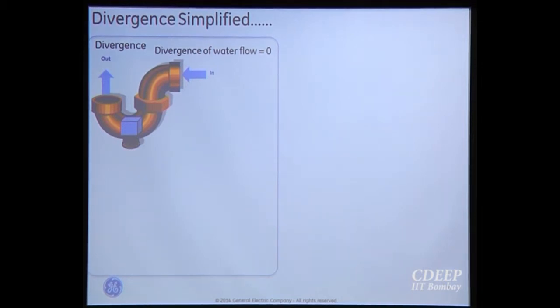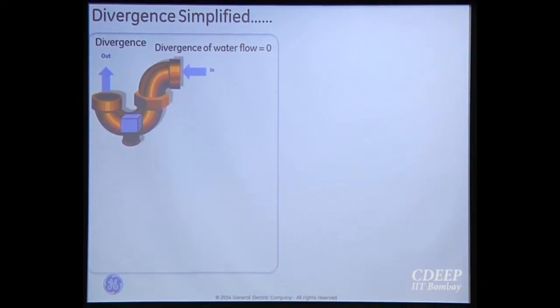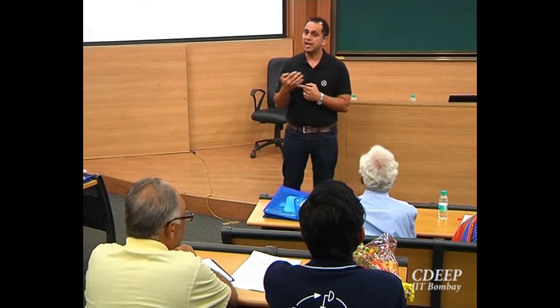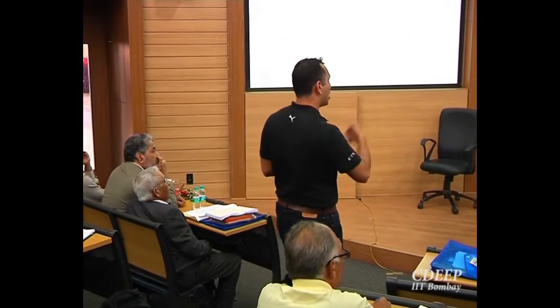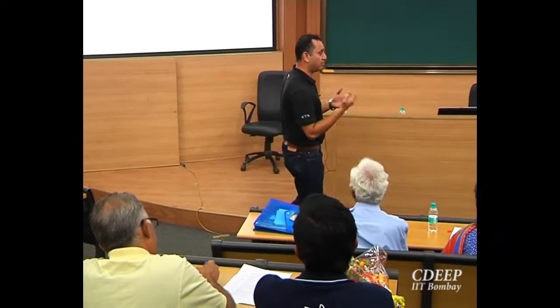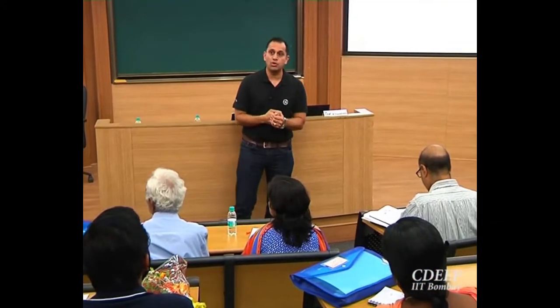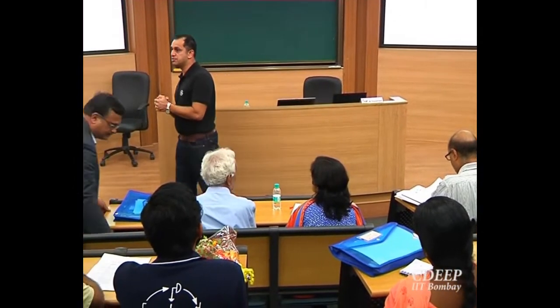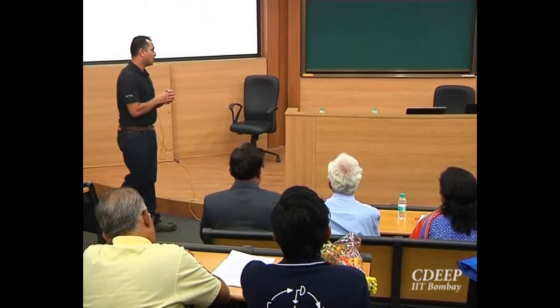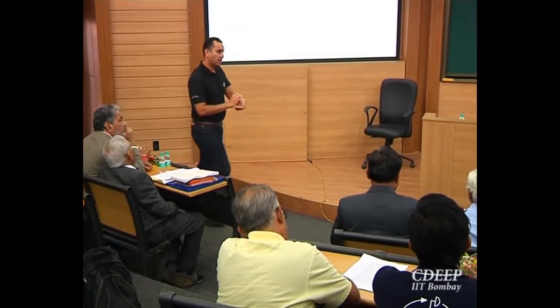The two biggest hurdles I always feel when explaining to students are divergence and curl. The exact physical meaning is sometimes missing in teaching. So what we do is try to explain it in a simple way. We will start with divergence and curl as a first step to help you understand how to mathematically formulate the EM problem for industry. Ultimately I want to showcase four case studies of main industry problems solved with the help of electromagnetics.